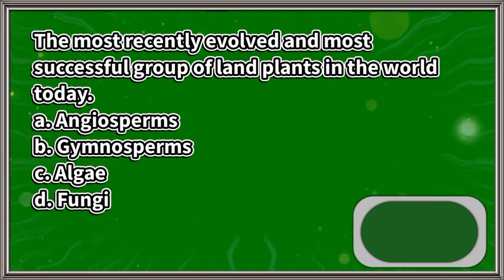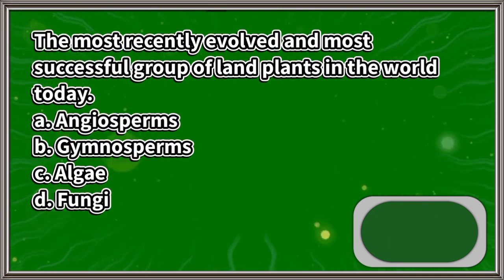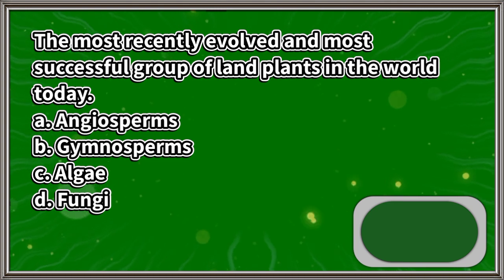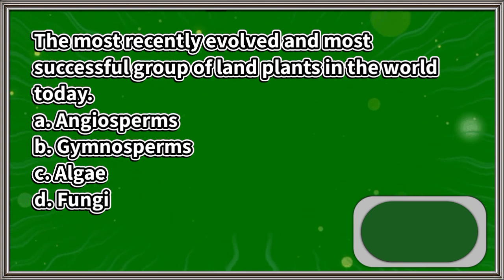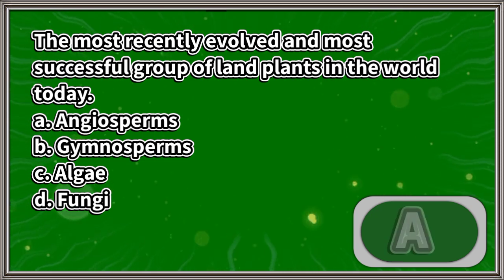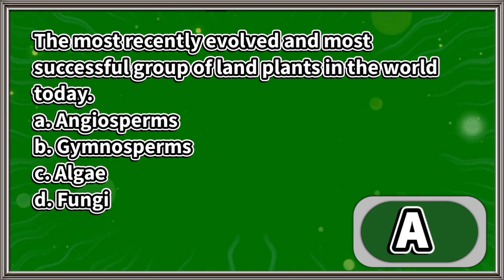The most recently evolved and most successful group of land plants in the world today: A. Angiosperms, B. Gymnosperms, C. Algae, D. Fungi. The answer is letter A.